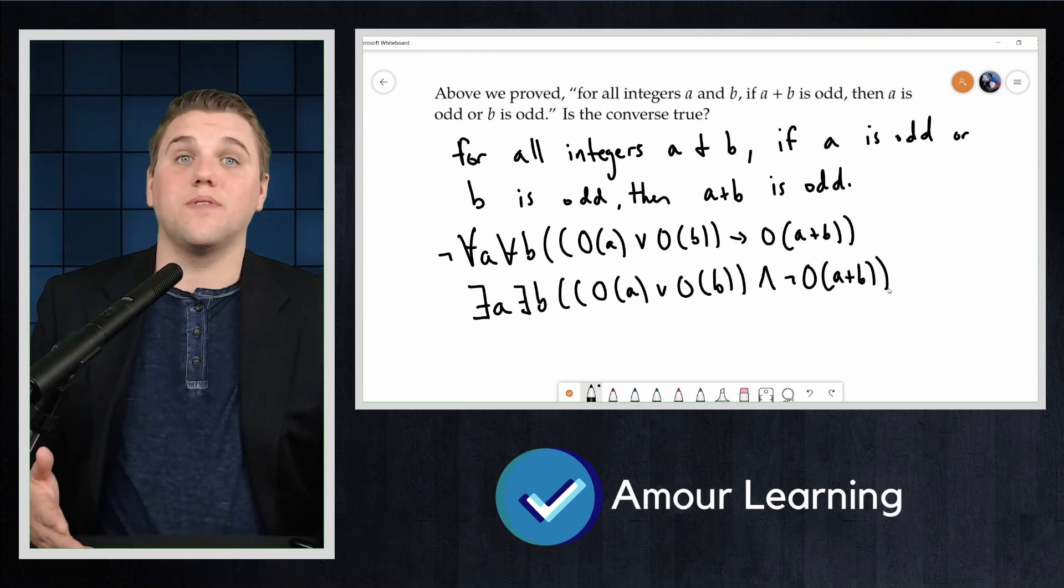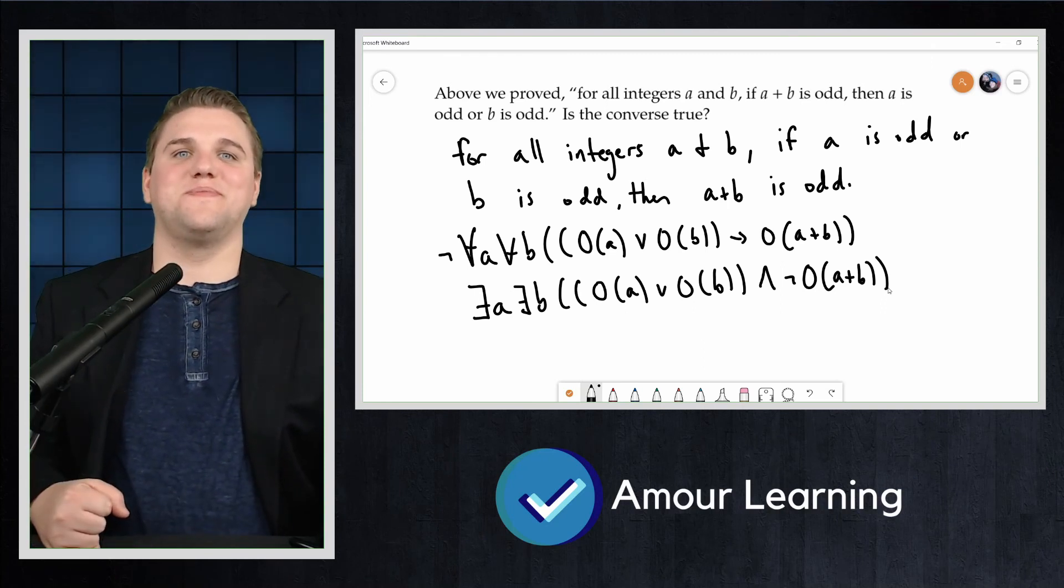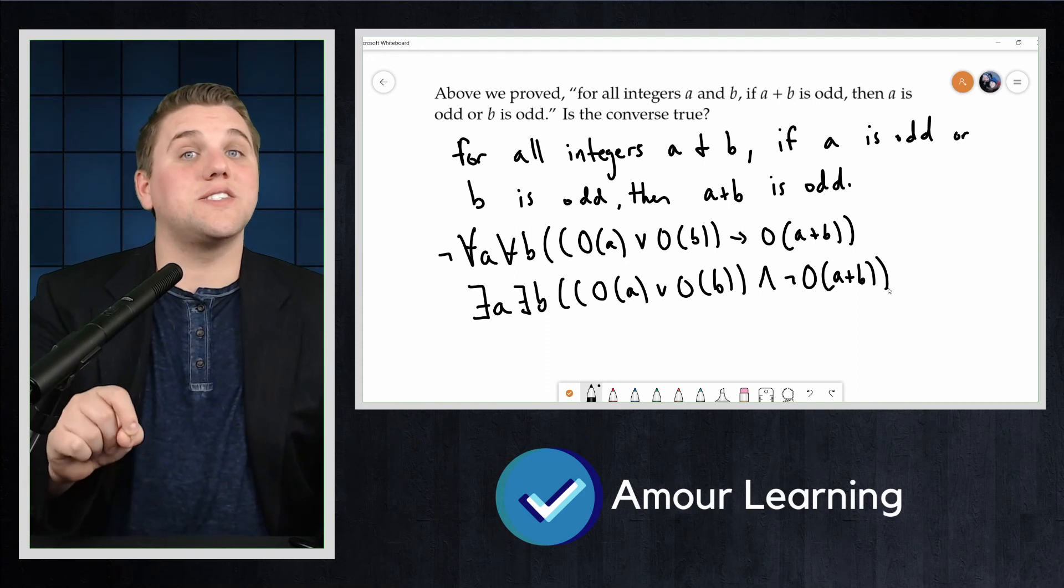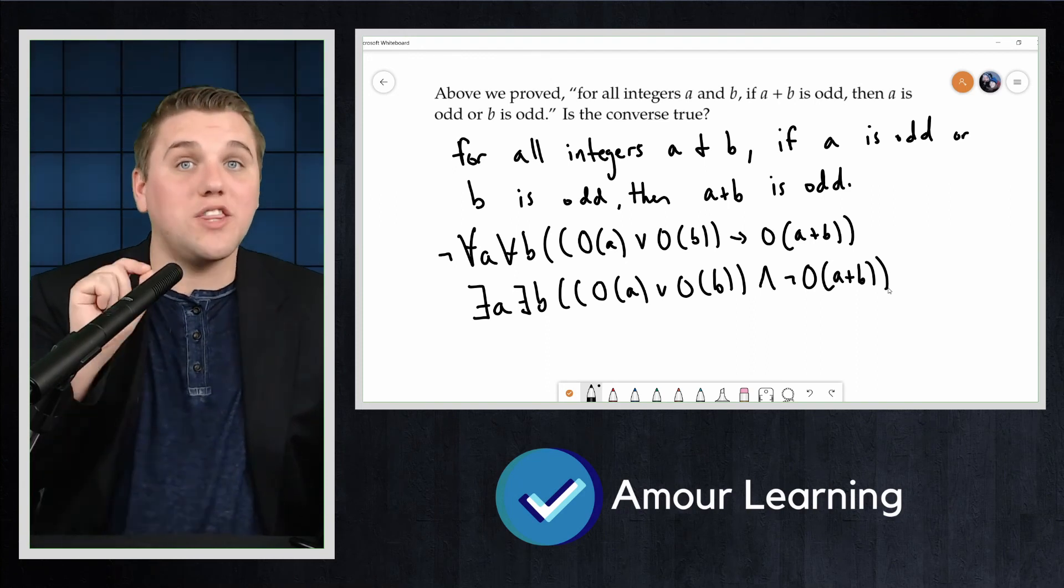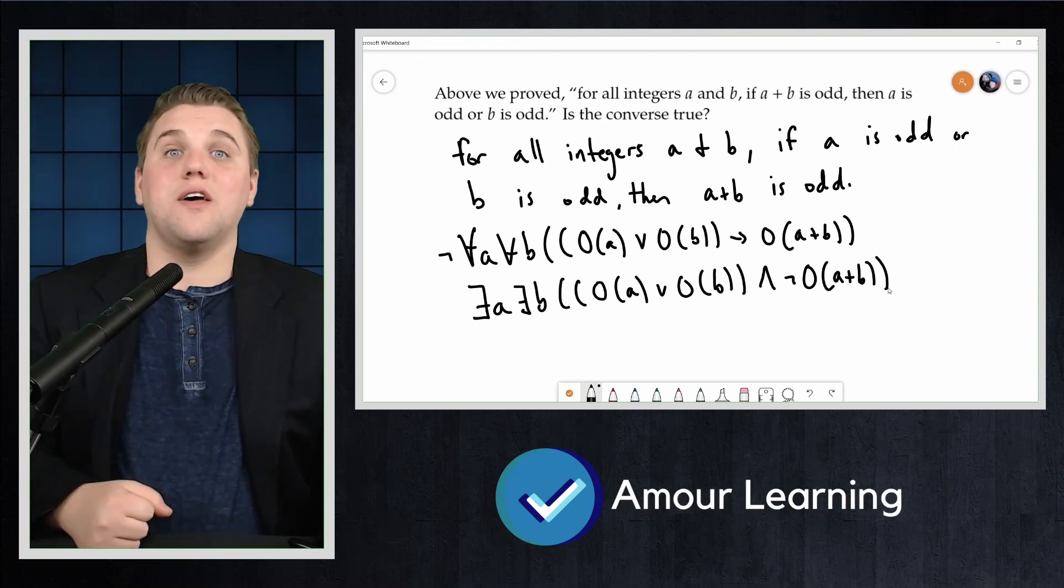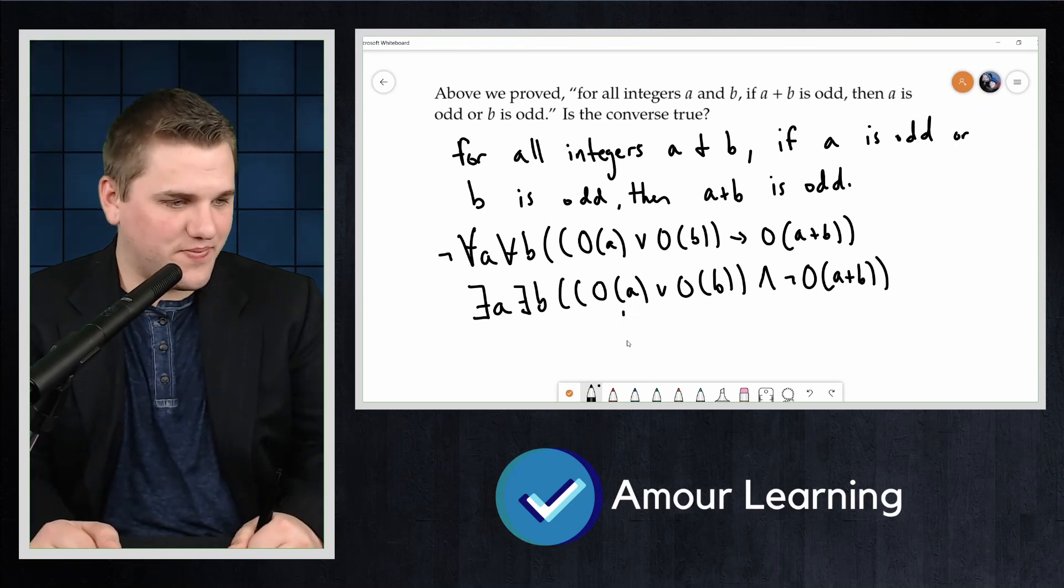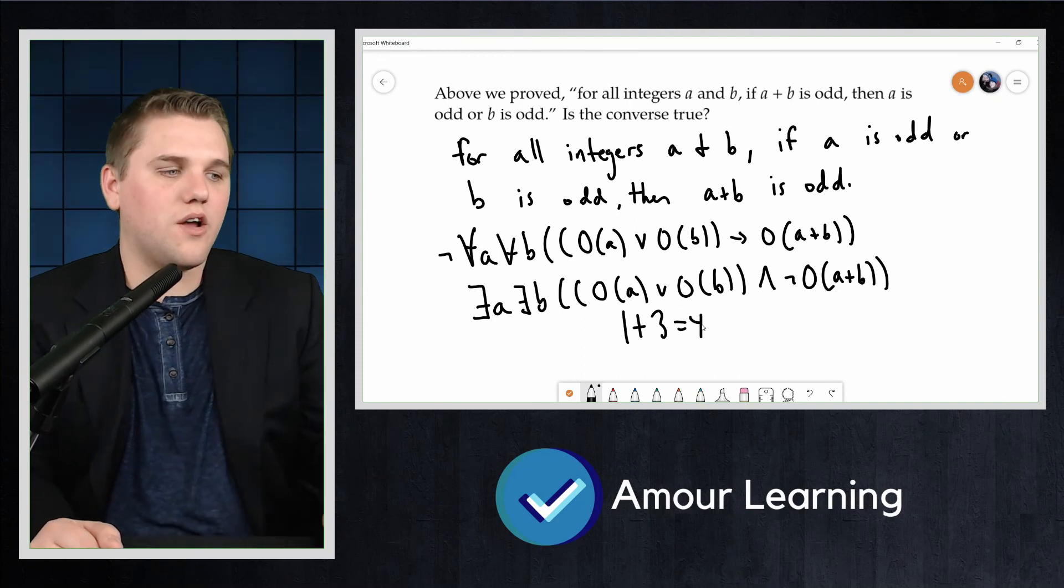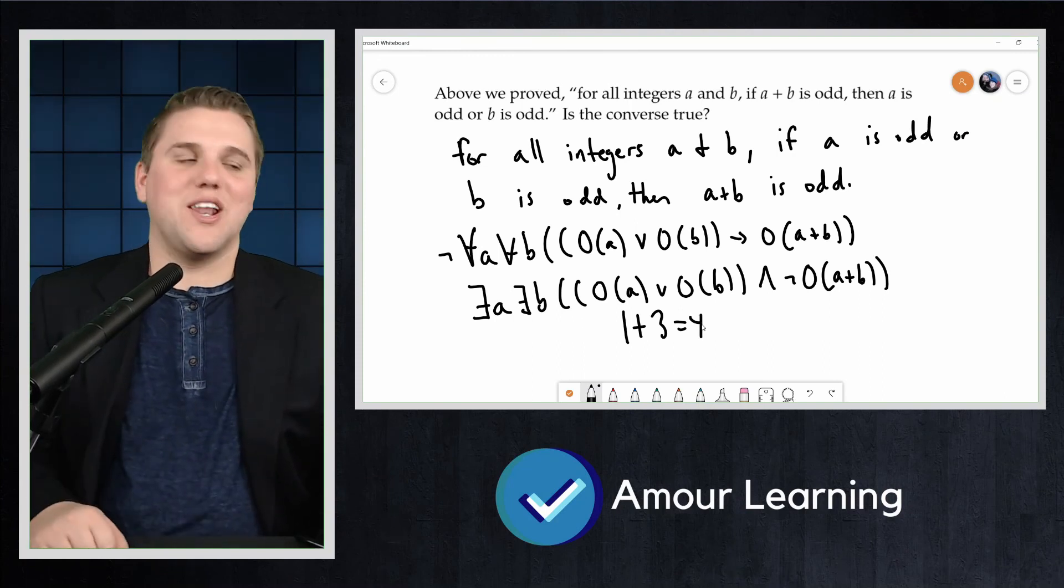One and three. Remember, or means one, or the other, or both. Both of these are odd, but one plus three equals four, which is not odd.